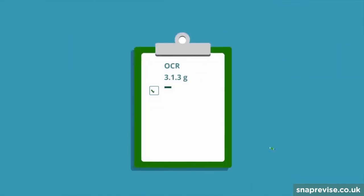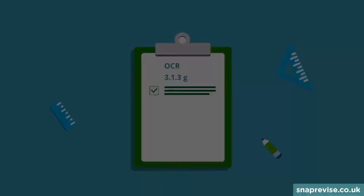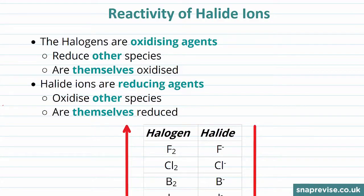This video will cover OCR specification point 3.1.3G. So let's begin by taking a look at the reactivity of our halide ions. You may remember the halogens are oxidizing agents — they reduce other species and they themselves are oxidized.